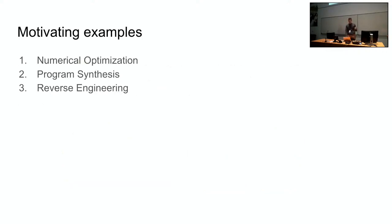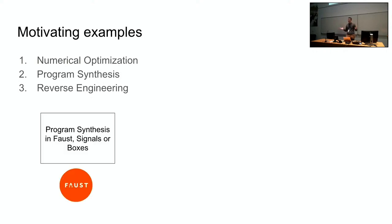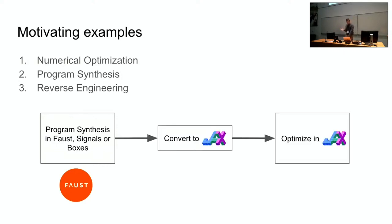So to recap the motivating examples were numerical optimization, program synthesis and reverse engineering and a pipeline that I am imagining and going to develop more in my research is this one here. So we can start with existing DSP code or we can use program synthesis to create that DSP code and we do that in Faust. We can do it at any of the representation levels which are either Faust code or signals or boxes. Signals are actually lower level than boxes. And now we convert that to Jax and then we optimize in Jax. And we complete the loop by learning from what we've optimized to inform how we do our program search in a better way.